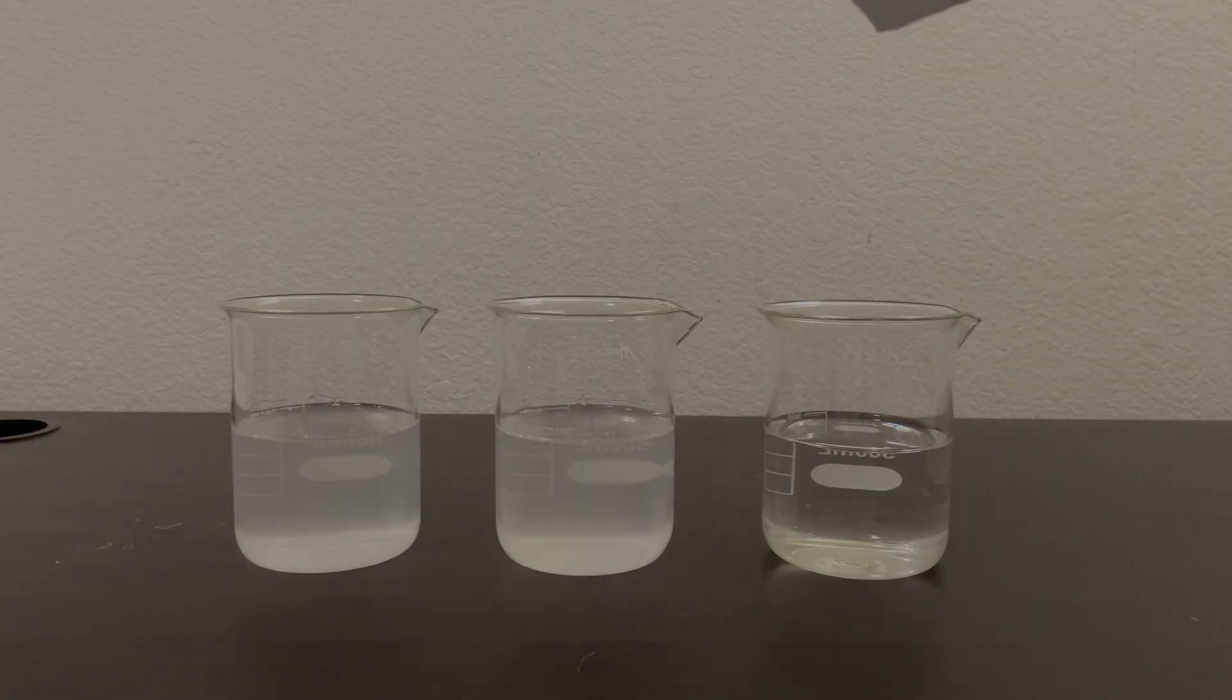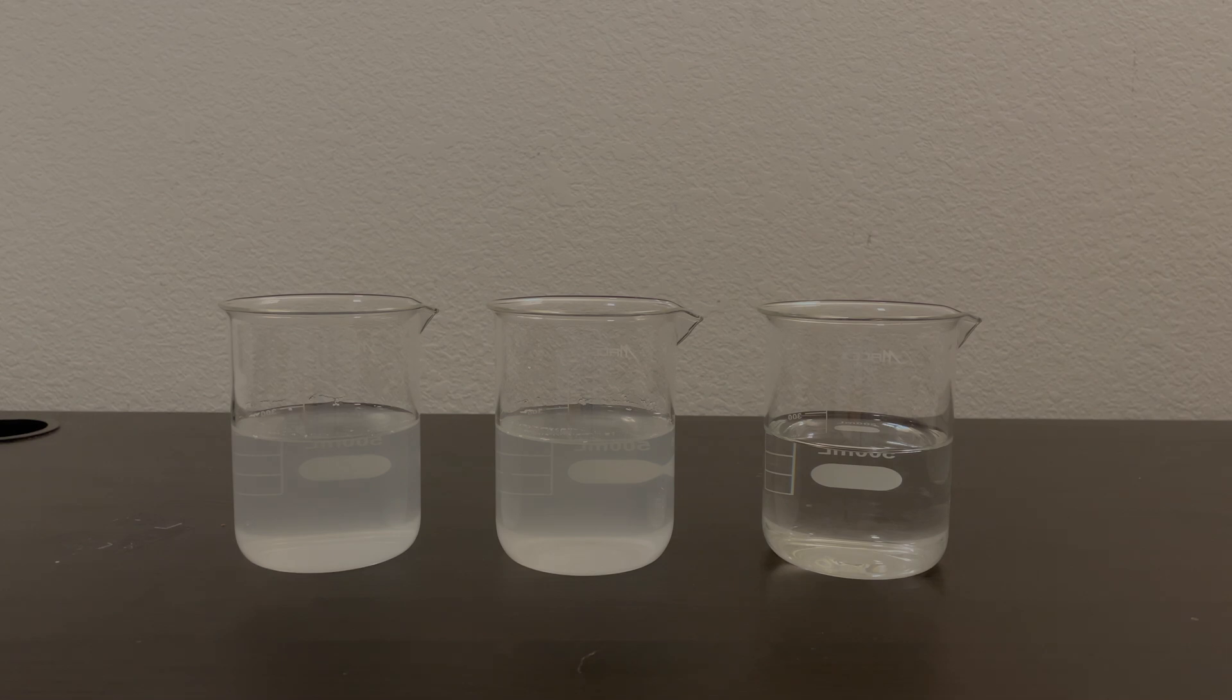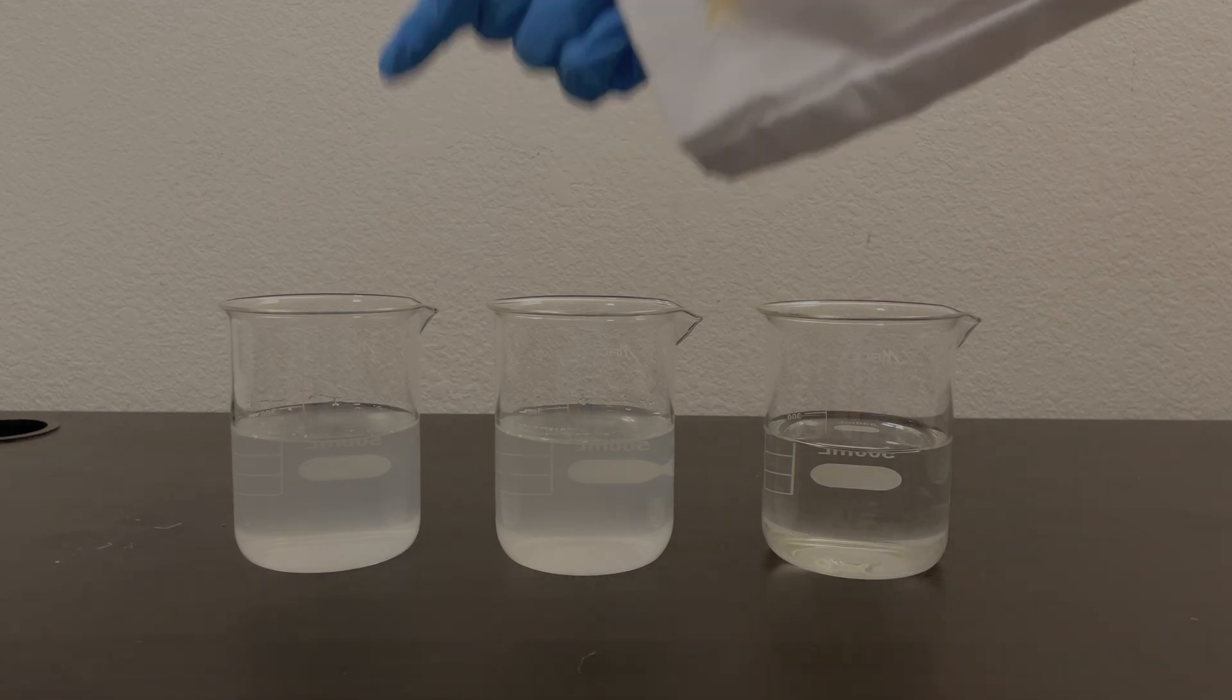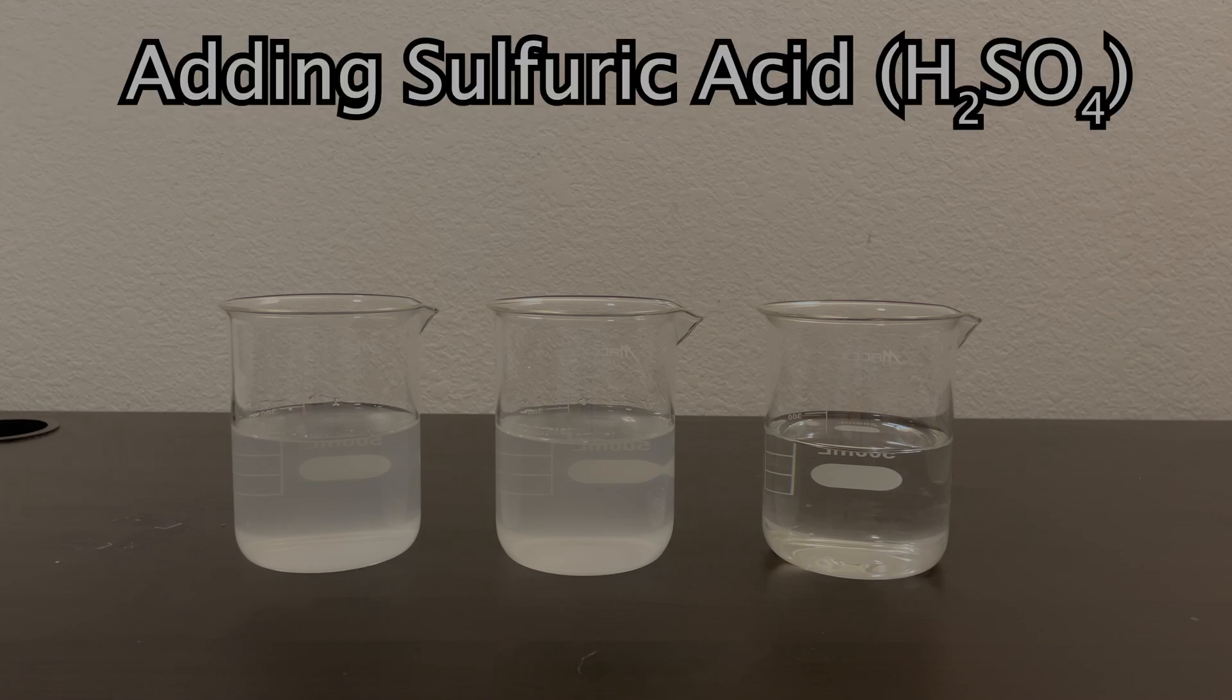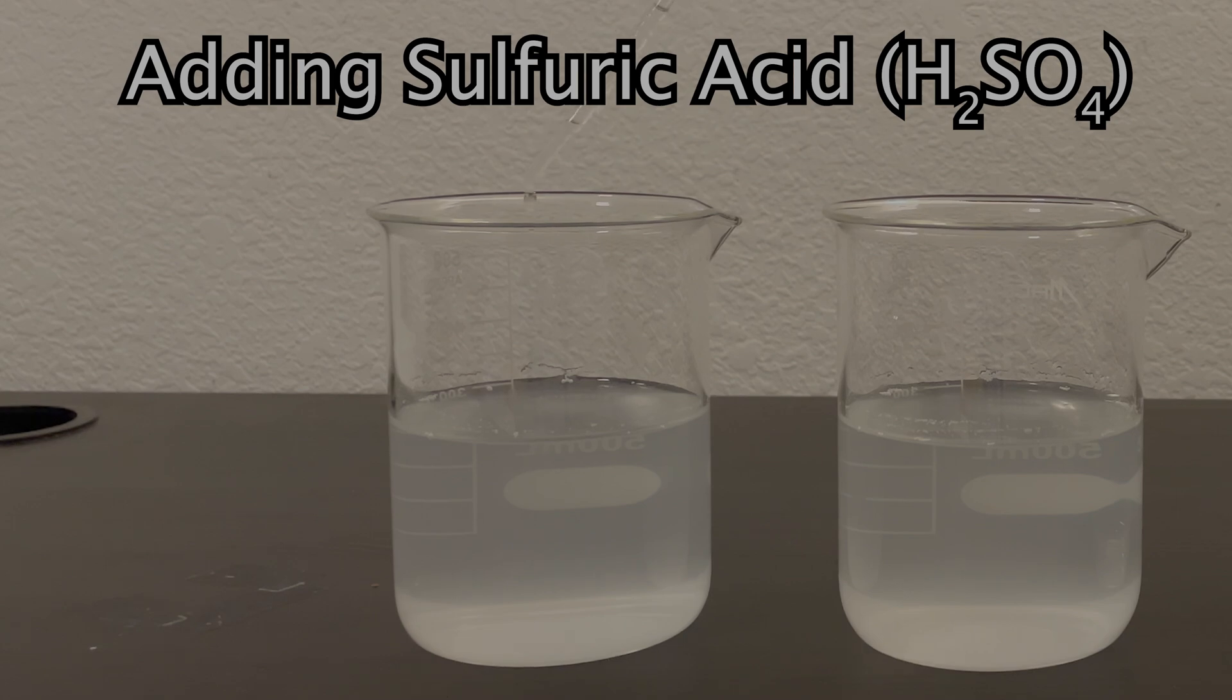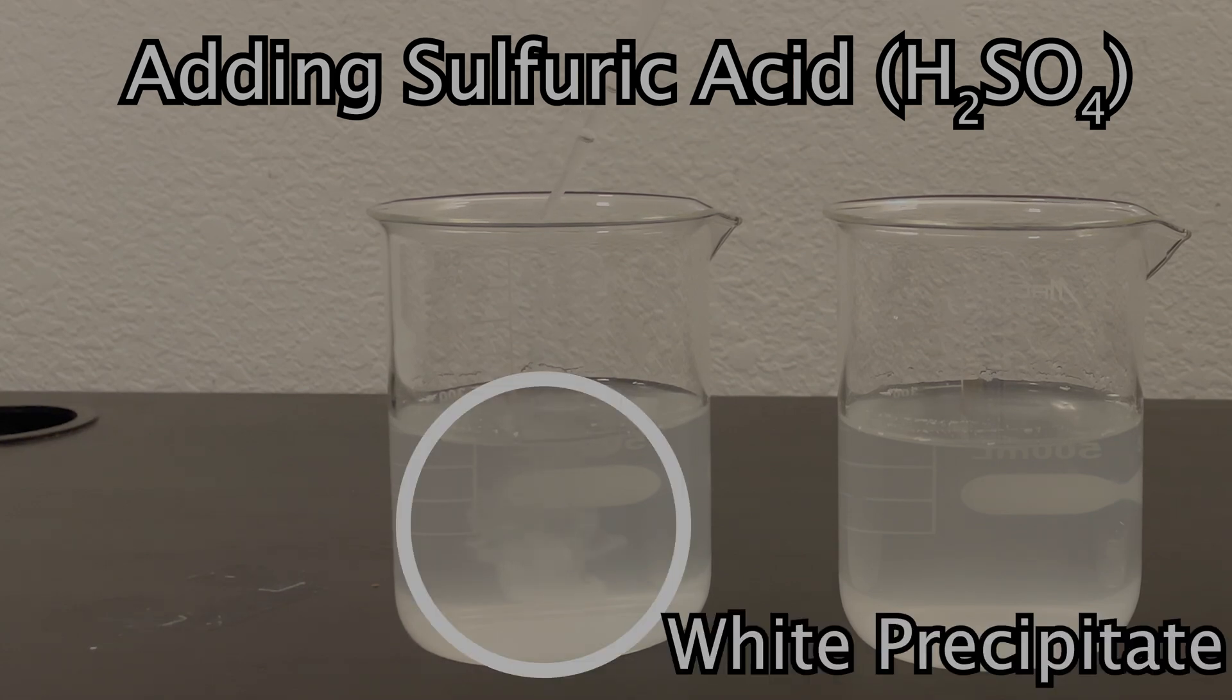Here, I've got three different beakers with three solutions. In the beaker on the left, I'm going to add a few drops of sulfuric acid. And you can see a white precipitate form.